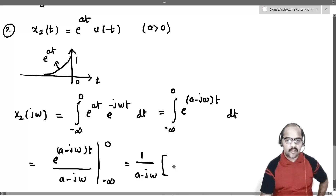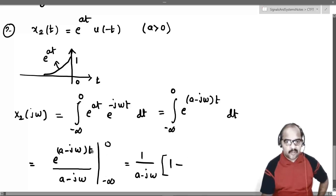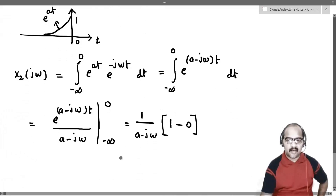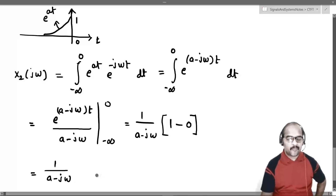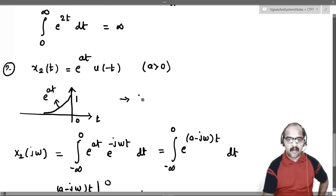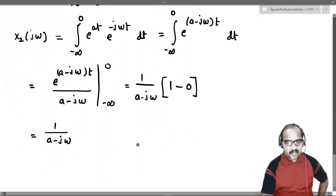Keeping 1/(a - jω) outside: substituting t = 0 gives e^0 = 1. Substituting t = -∞ with a positive gives e^(-∞) = 0. So the final result is 1/(a - jω). Therefore, the Fourier transform X2(jω) of the signal e^(at)·u(-t) equals 1/(a - jω).